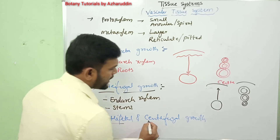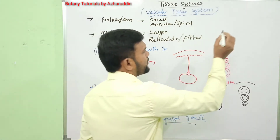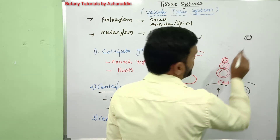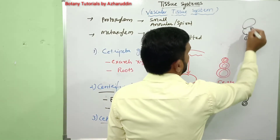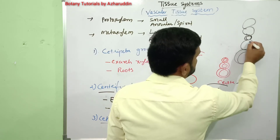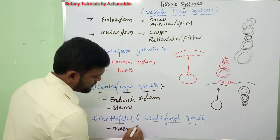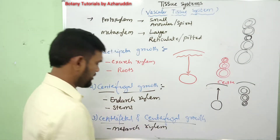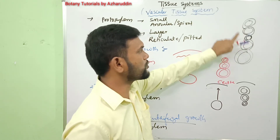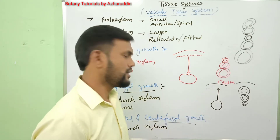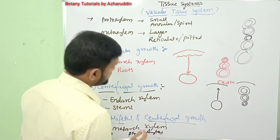In the third type — centripetal and centrifugal growth — after completion of proto xylem formation, meta xylem formation occurs on both the outside and inside. This type of xylem is called mesarch xylem. In mesarch xylem, centrally placed proto xylem is present, and meta xylem elements are located on either side of the proto xylem. Mesarch xylem is found in pteridophytes.